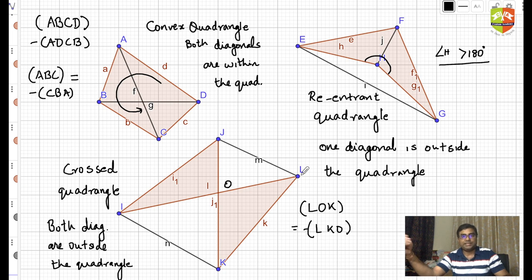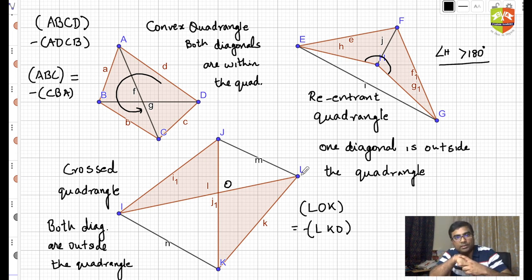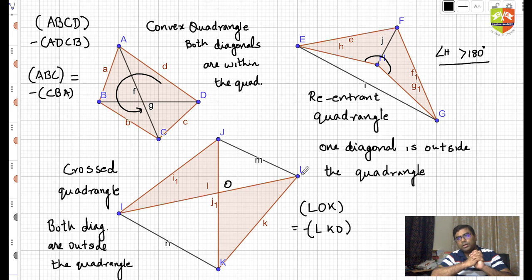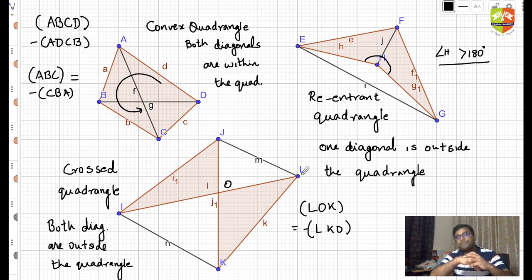Whenever we're discussing any theorem and you're confused, you can always come back to this video to understand the meanings of different notations. Next, we are going to take up the very first theorem related to quadrangles — Varignon's parallelogram. He was a French mathematician, a contemporary of Leibniz and Isaac Newton. After that, we will discuss Brahmagupta's theorem, which many of you may have already studied, followed by multiple other geometrical topics.